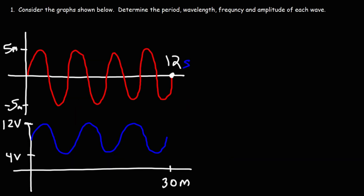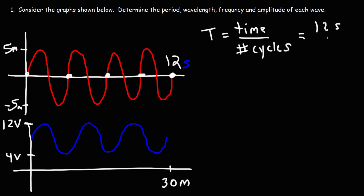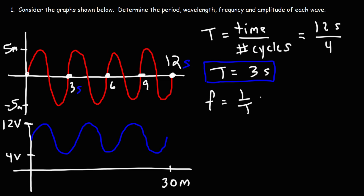Let's work on some problems. Consider the graphs shown below — determine the period, wavelength, frequency, and amplitude of each wave. For the red wave, the period is the time to complete one cycle, or the total time divided by the total number of cycles. The red wave has four cycles in 12 seconds, so 12 divided by 4 is 3 — the period is 3 seconds.